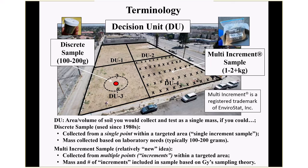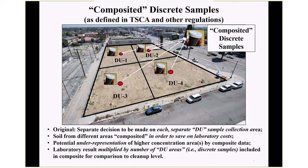A discrete sample is intended to represent the area around it — how big of an area is a good question. A composite sample, going back to original EPA guidance from the 1980s and early 1990s, originally meant samples collected from separate areas that are combined into one bulk sample for testing to save on laboratory cost. The problem is you could potentially underrepresent higher concentration areas in your composite sample. Under TSCA and other regulations, if you collect a composite sample, you have to multiply your data results by the number of DU areas or discrete samples included in the composite for comparison to cleanup levels.